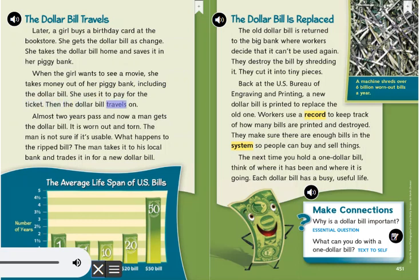Then the dollar bill travels on. Almost two years pass, and now a man gets the dollar bill. It is worn out and torn. The man is not sure if it's usable. He takes the ripped bill to his local bank and trades it in for a new dollar bill.